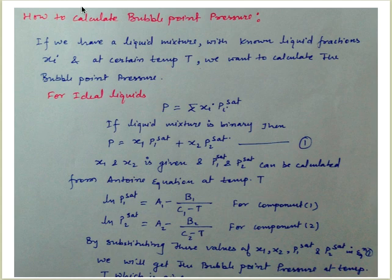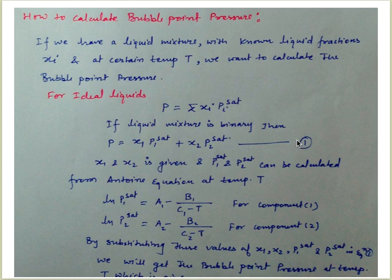How to calculate bubble point pressure — this is our main target. If we have a liquid mixture with known liquid fraction x_i at a certain temperature T, we want to calculate the bubble point pressure. For an ideal liquid, we use: P = sigma(x_i * P_i_sat). For a binary mixture, it becomes P = x1*P1_sat + x2*P2_sat, where x1 and x2 are given.